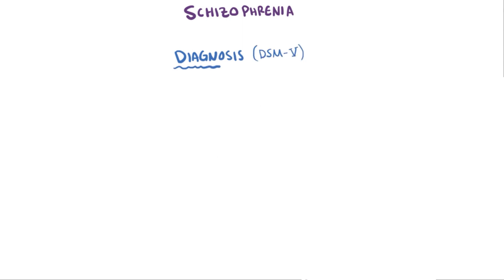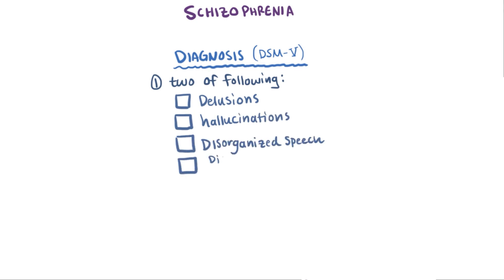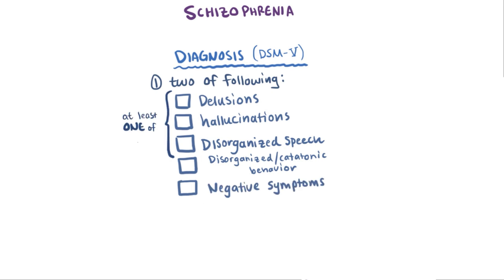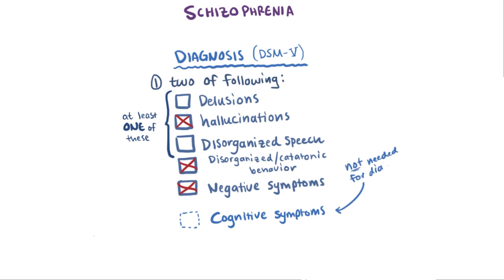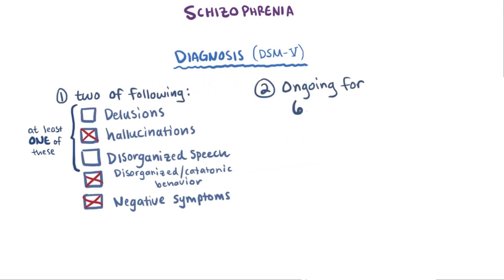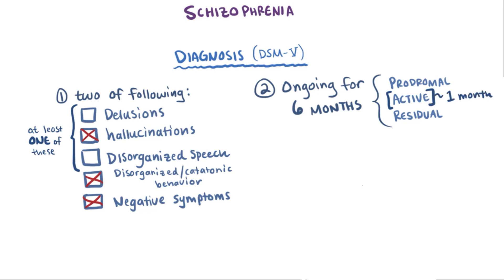For an official diagnosis of schizophrenia, patients need to be diagnosed with two of the following symptoms: delusions, hallucinations, disorganized speech, disorganized behavior, catatonic behavior, or negative symptoms. At least one of them has to be either delusions, hallucinations, or disorganized speech — so basically they couldn't have just disorganized behavior and negative symptoms. Even though some patients have cognitive symptoms as well, they aren't specifically needed for a diagnosis. Signs of these disturbances must be ongoing for at least six months, with at least one month of active phase symptoms. Finally, those symptoms can't be attributable to another condition, like substance abuse.